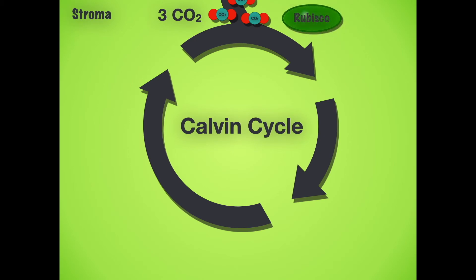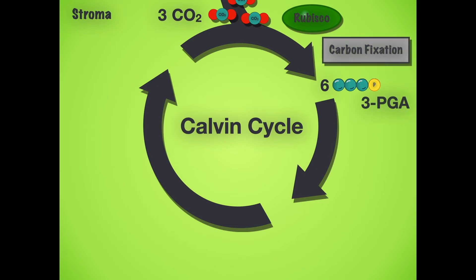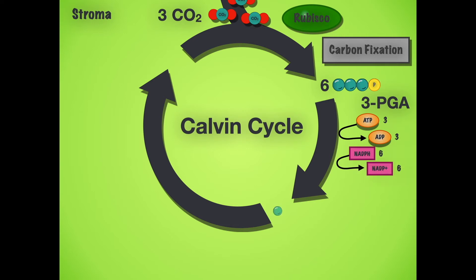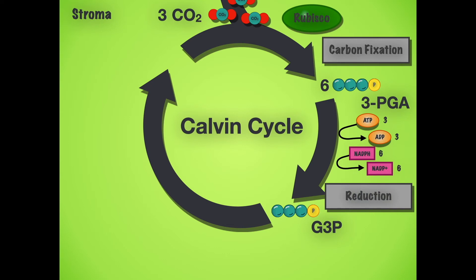Going through the cycle in more detail: this is an enzyme-catalyzed reaction where rubisco takes three CO2 and produces six PGA in the carbon fixation phase. This requires energy from the electron transport chain via the light-dependent reactions. We then use ATP and NADPH in the reduction phase to produce G3P — six molecules of it.